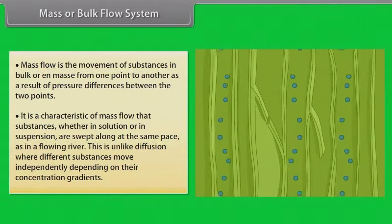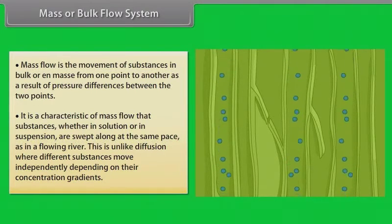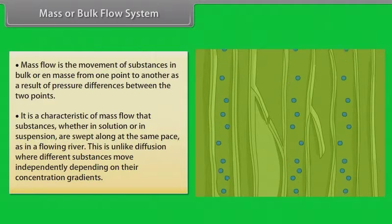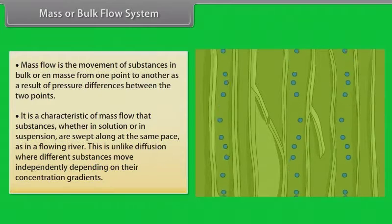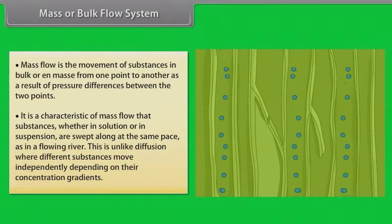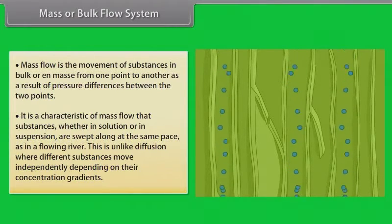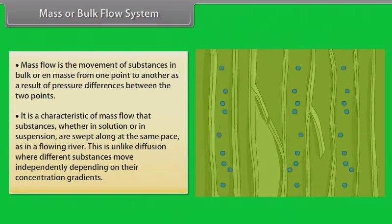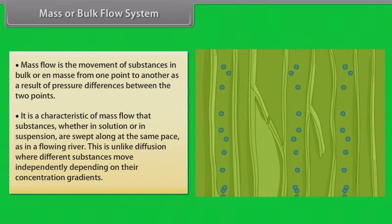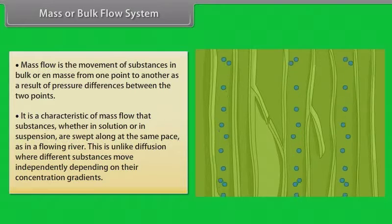It is a characteristic of mass flow that substances, whether in solution or in suspension, are swept along at the same pace as in a flowing river. This is unlike diffusion where different substances move independently depending on their concentration gradients. Bulk flow can be achieved either through a positive hydrostatic pressure gradient, e.g. a garden hose, or a negative hydrostatic pressure gradient, e.g. suction through a straw.